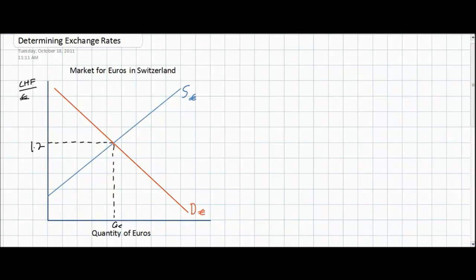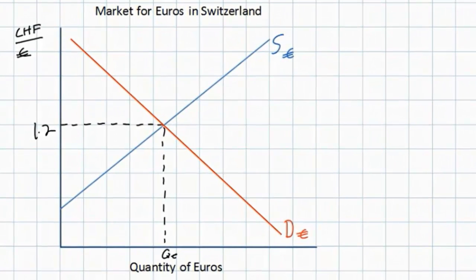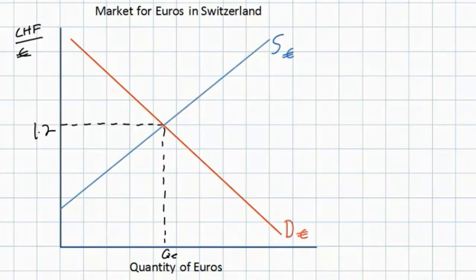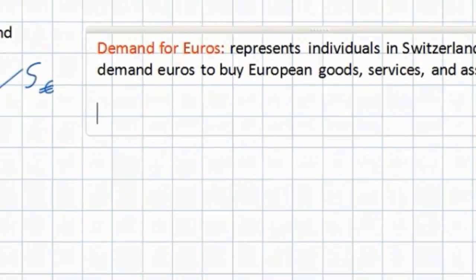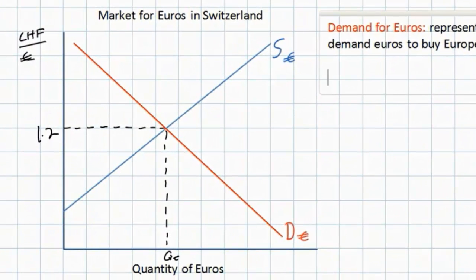Let's look at the market for euros in Switzerland here on the left. In Switzerland there is a demand for euros. The demand for euros comes from Swiss households who wish to buy European goods and services and other assets, including European government bonds and savings in European banks. The red demand curve D for euros represents Swiss households demanding European goods, services, and assets. The supply of euros comes from European individuals who are buying Swiss goods, services, and assets, which leads to an inflow of euros into Switzerland.